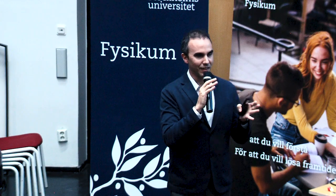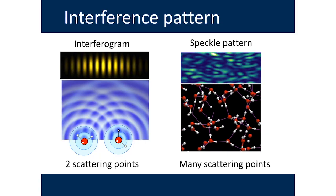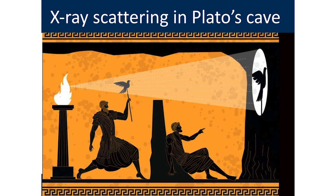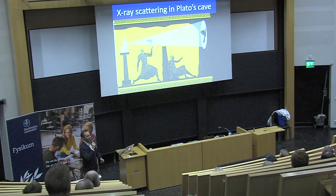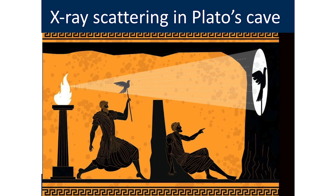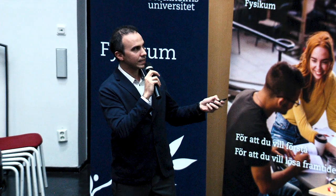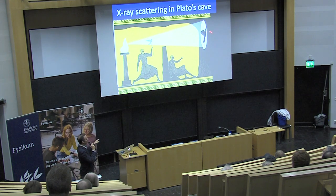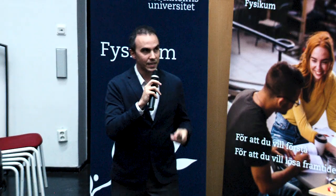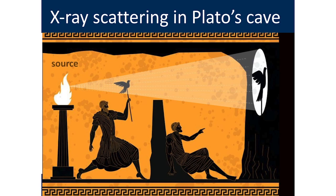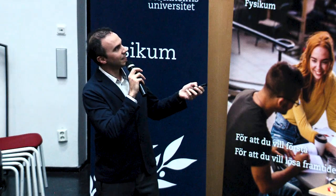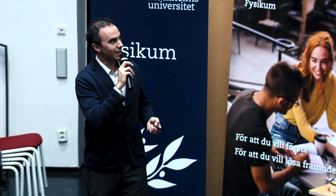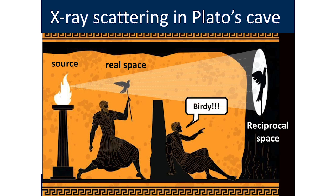Let me explain in more detail how we go from looking at this interferogram, this speckle pattern, back into pictures of molecules. To do that, we have to go inside Plato's cave. This is a philosophical concept that says what we are seeing is a projection of reality. We are sitting inside the cave and can only see a projection — we are always missing a small part of it. In our case, this is the source — the fire. Here is the real space, and this is what we call in physics the reciprocal space — this is the projection.